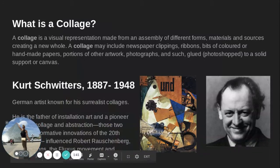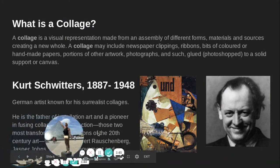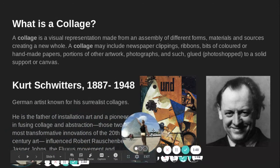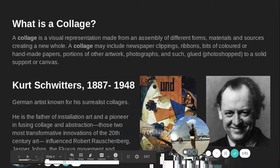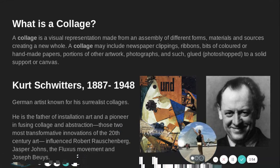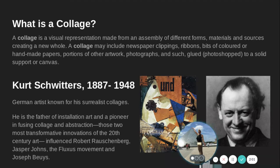So what is a collage? We know what surrealism is, but what about collage? A collage is a visual representation made from an assembly of different forms, materials, and sources creating a new whole. A collage may include newspaper clippings, ribbons, bits of colored or handmade paper, portions of other artwork, photographs — and they are glued. In present day, a lot of people like to do collages on the computer, Photoshopping them to a solid canvas for support. Collage is actually a French word and it means to glue. I think the French do it best — it just means to glue.